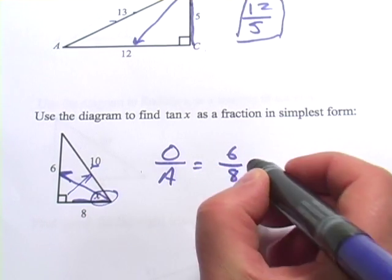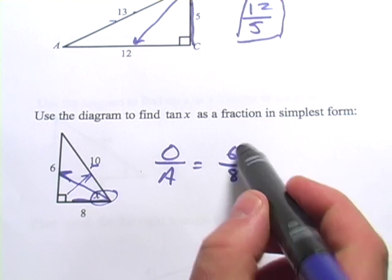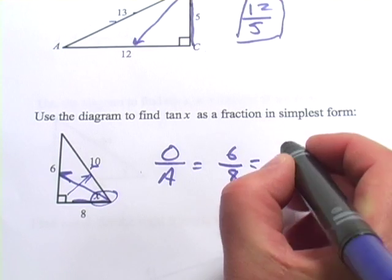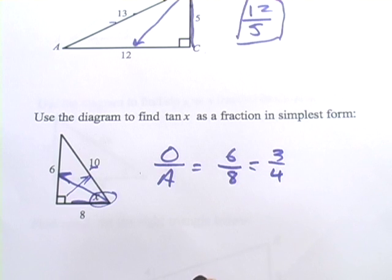That's 6 eighths, but they want it in simplest form. So we can take 2 out of the top and the bottom, and we get 3 fourths. So that is how to set up ratios with the tangent function.